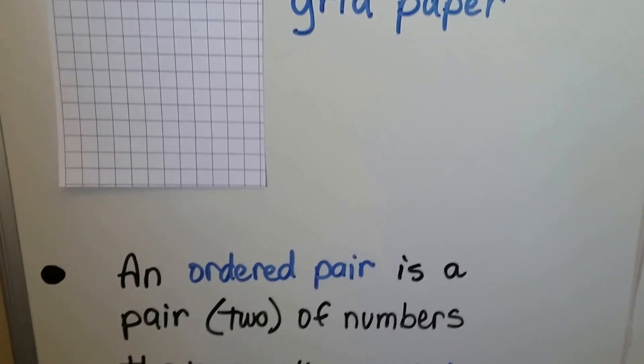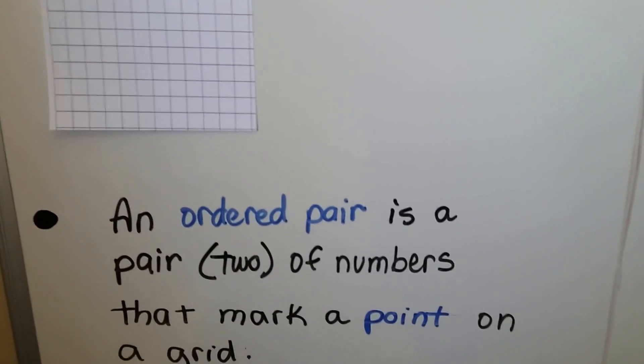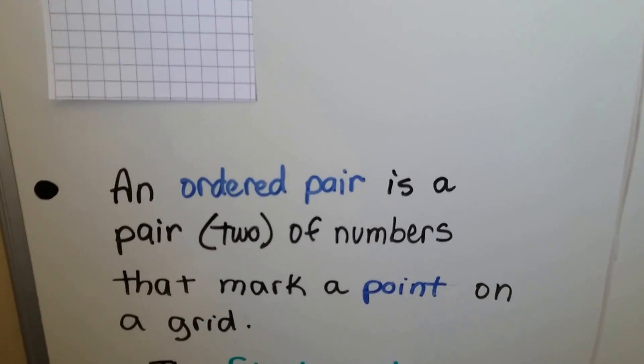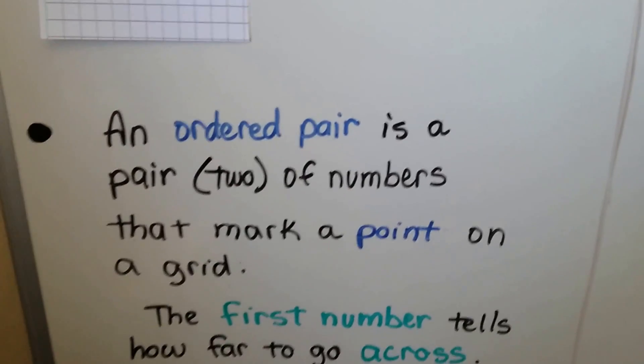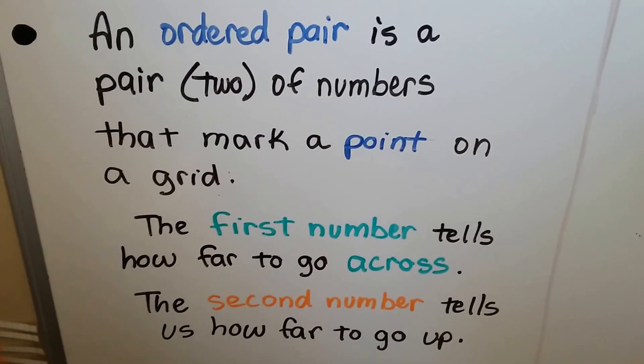An ordered pair is a pair, that's two, it's a pair of numbers that mark a point on the grid. The first number tells us how far to go across. The second number tells us how far to go up.